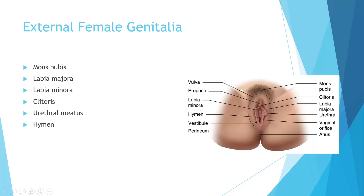External genitalia: you've got your mons pubis right above the pelvic area and above the entrance to the vagina. Then your labia majora — the larger outer area around the entrance. And your labia minora — typically the thinner folds of skin around the entrance to the vagina. The vulva is collectively this whole area. You've got your hymen, which is a very thin membrane that stretches across a portion of the entrance to the vagina — typically stretched or torn during tampon use, intercourse, or even physical activity like riding horses. The perineum is the area between the vaginal opening and anus, where we grade tears during or after childbirth.